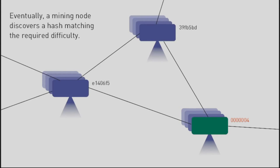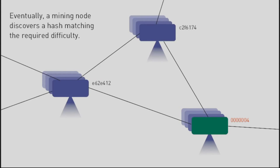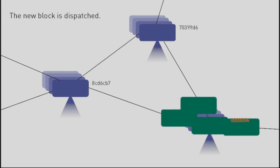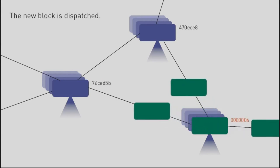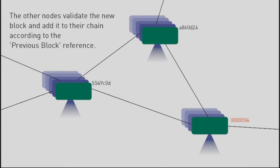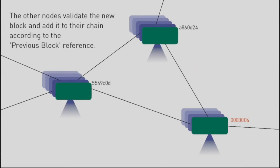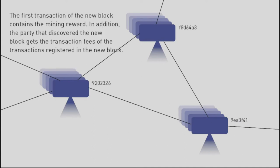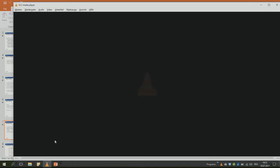Eventually, one of the blocks finds a hash that matches the difficulty and the new block is dispatched. The other blocks in the network have to validate not only the block itself, but also each transaction registered in the block.